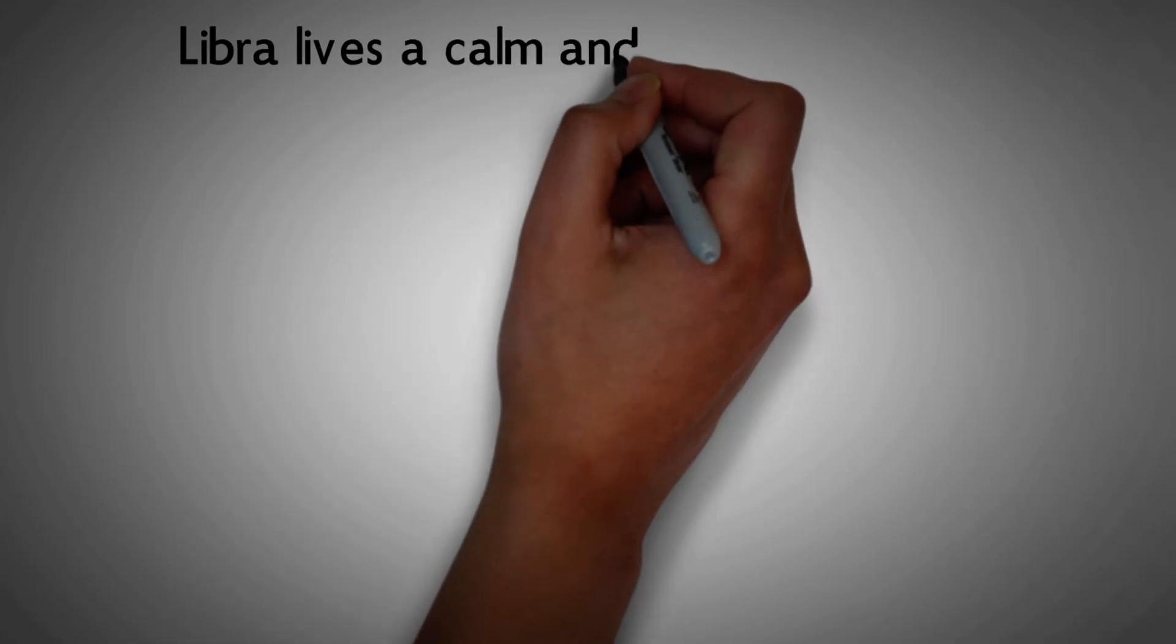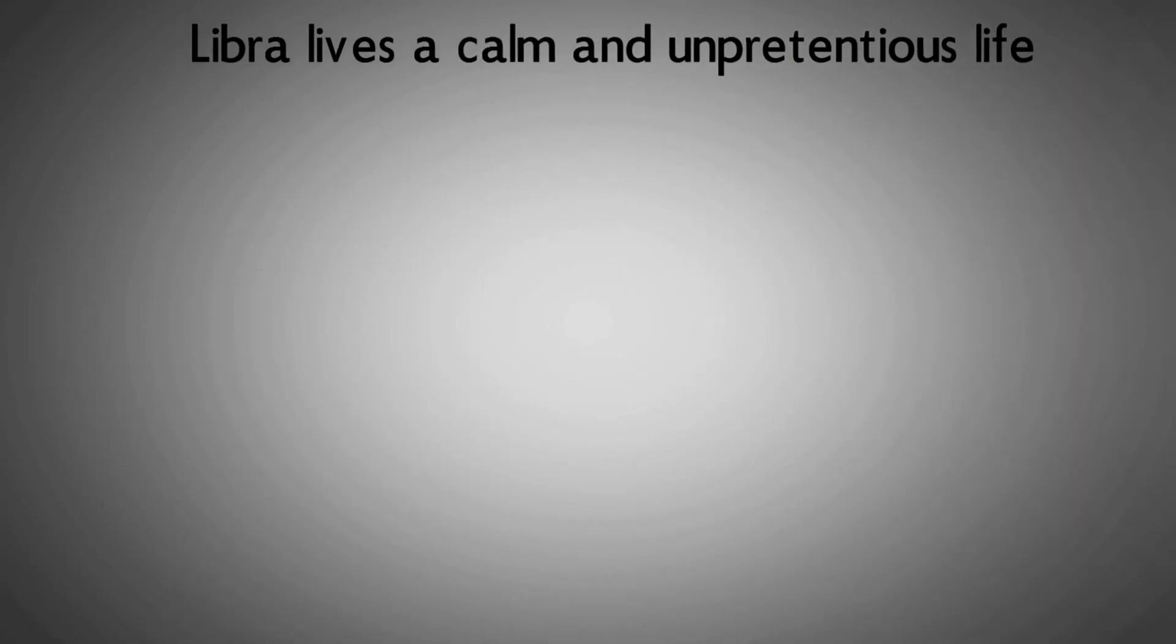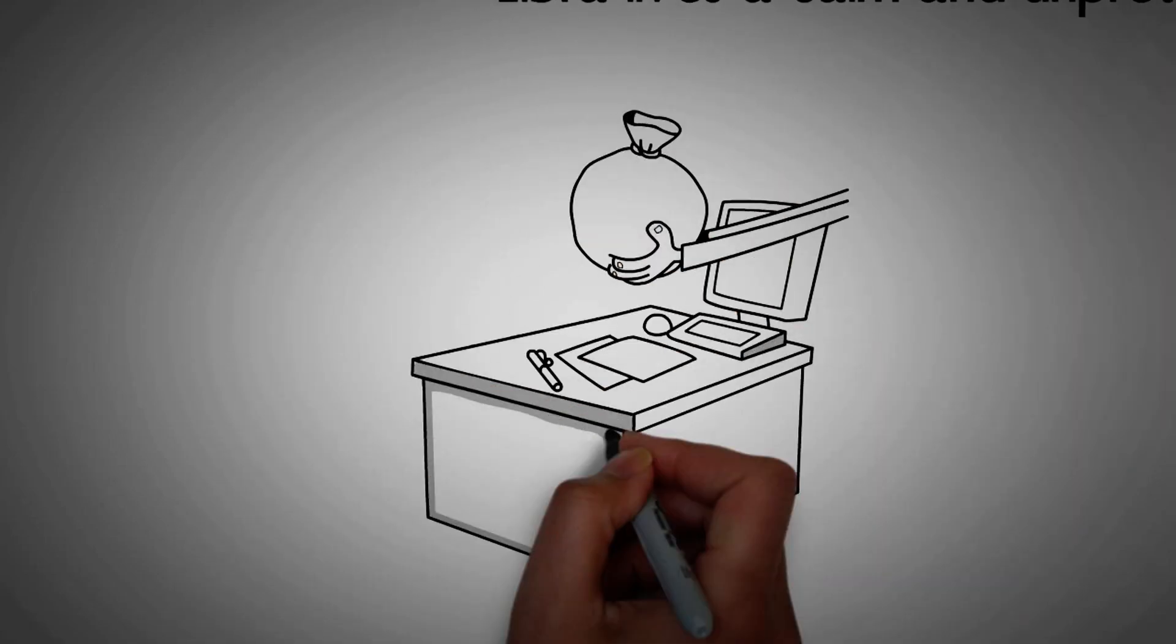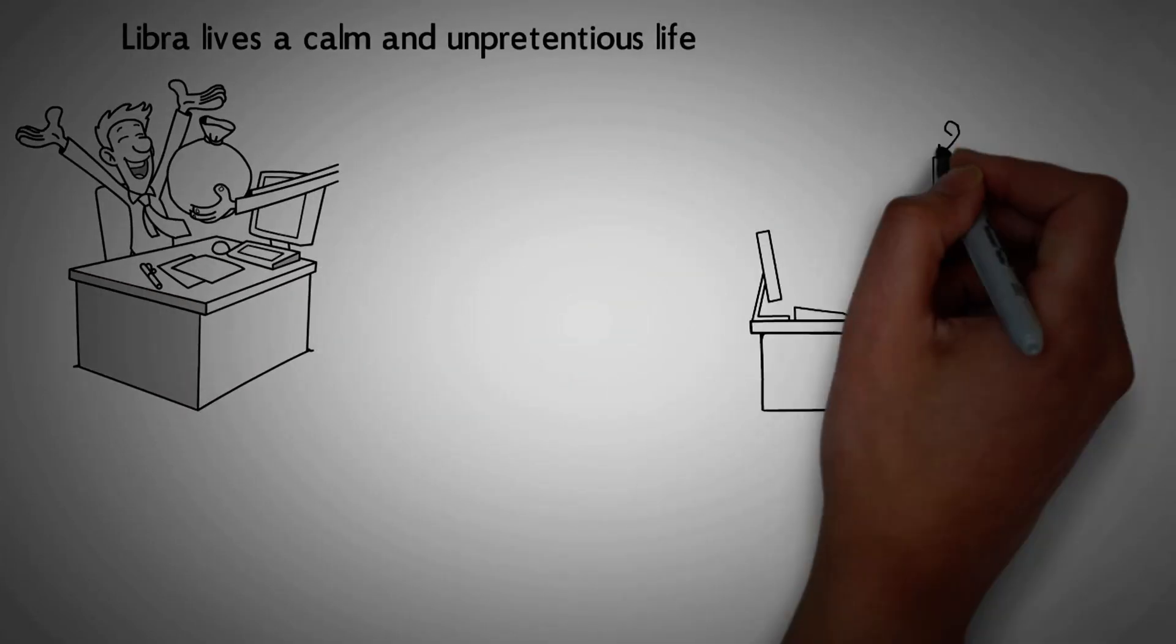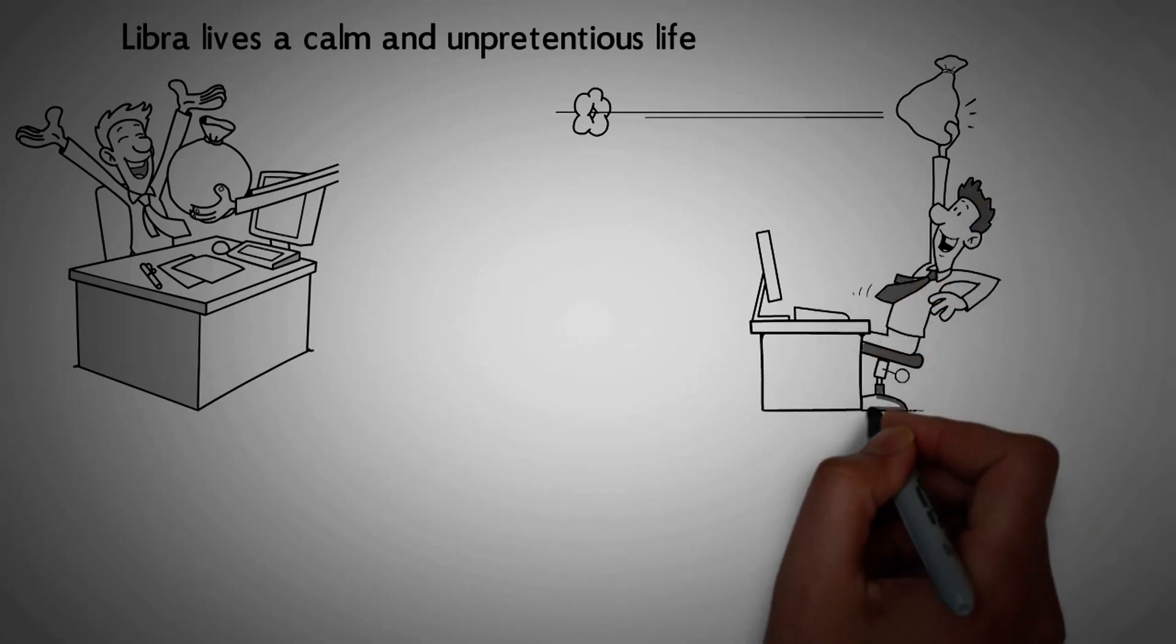Number 9. Libra lives a calm and unpretentious life. If you are born under Libra's zodiac sign, you take things in stride and you don't get stressed. They are capable of remaining composed and relaxed during chaotic situations.